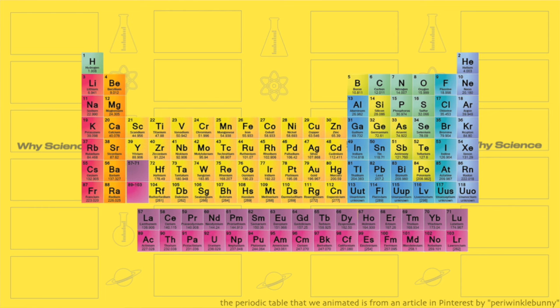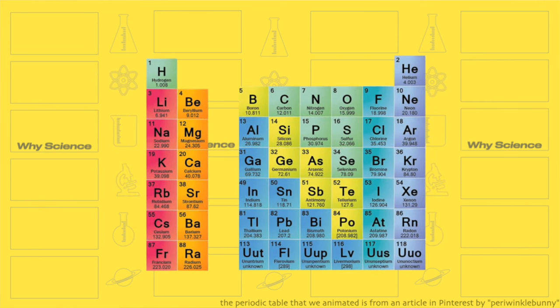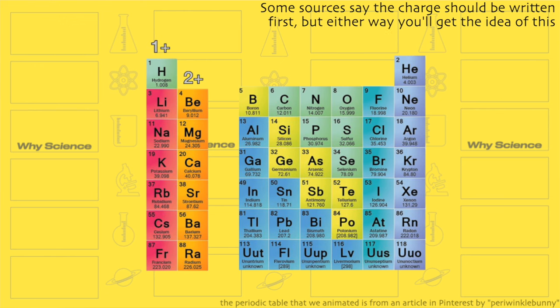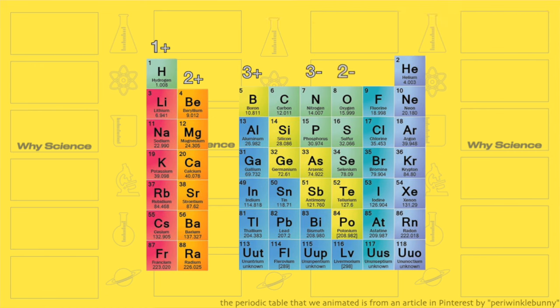Different elements can have different charges. We can easily remember those by looking at the periodic table and disregarding the transition metals for a while. In simpler words, Group 1 is 1+, Group 2 is 2+, Group 3 is 3+, Group 5 is 3-, Group 6 is 2-, and Group 7 is 1-. Noble gases are exempted since they are already stable atoms.